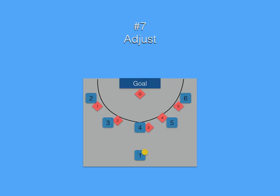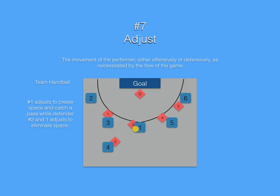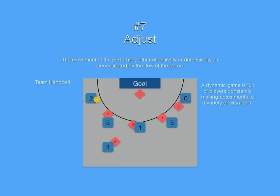Our last game component is adjust. Adjusting is the movement of the performer either offensively or defensively as necessitated by the flow of the game. Defender number 4 adjusts to create space and catch a pass while defender number 3 adjusts to eliminate space. Number 1 adjusts to create space and catch a pass while defenders number 2 and 1 adjust to eliminate space. The offense adjusts to the defense by recognizing number 2 is open and passes quickly to get the ball to number 2. A dynamic game is full of players constantly making adjustments to a variety of situations.